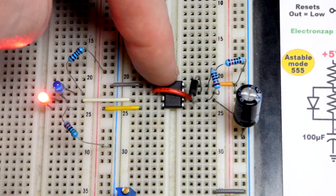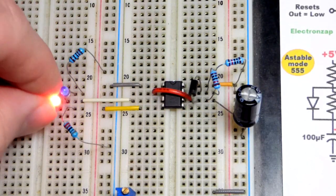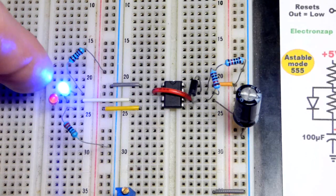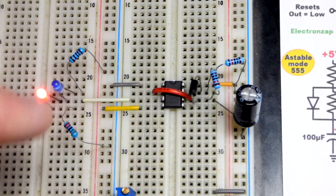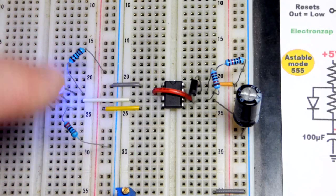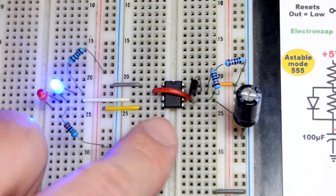So now in this video we're going to look at a 555 timer wired in A-stable mode. The red and blue LED are just going to keep alternating back and forth forever. That's what A-stable means, no stable state. We could also call it a multi-vibrator.